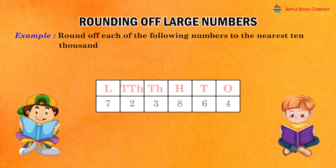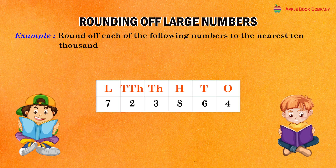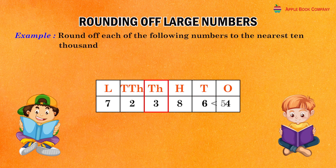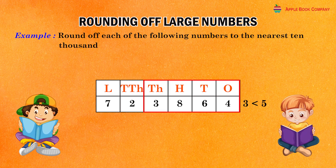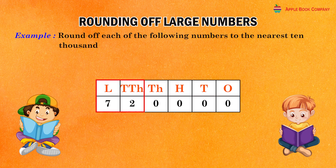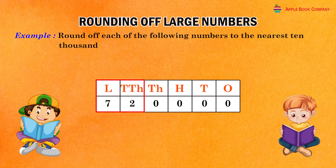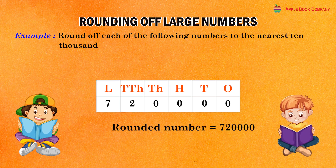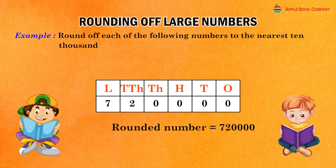In the number 7,23,864, the digit at the 1,000th place is 3 which is less than 5. Therefore, replace the thousands, hundreds, tens and ones digits by zeros and keep the other digits as they are. Rounded number is equal to 7,20,000.